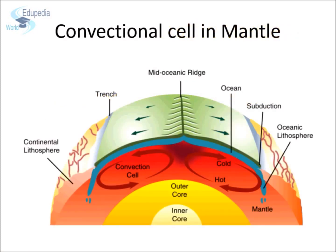We know that seafloor spreading moves the lithospheric plates around the Earth's surface. But what drives seafloor spreading? The answer is convection currents in the mantle. At this point, it would help to think of a convection cell as a rectangle or oval. Each side of the rectangle is a limb of the cell. The convectional cell is located in the mantle. The base is deep in the mantle and the top is near the crust.